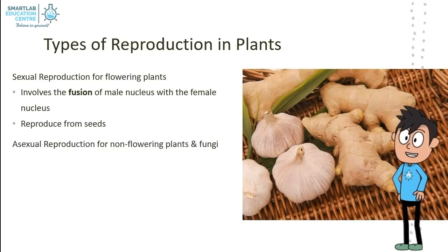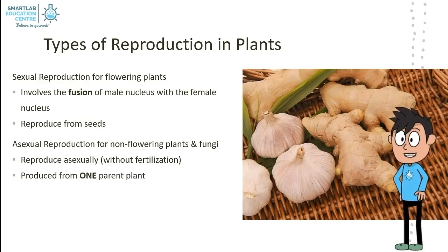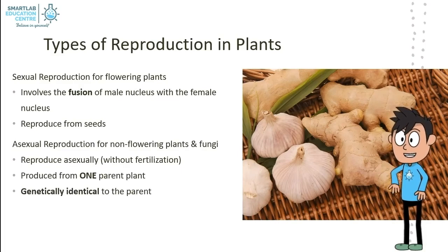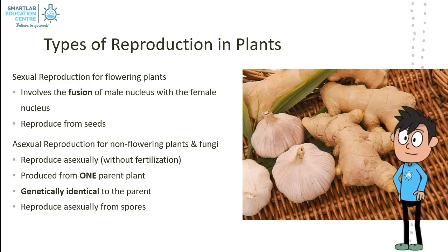Second, we have asexual reproduction for non-flowering plants and fungi. For this method of reproduction, fertilization doesn't occur. Only one parent plant is involved. The offspring are genetically identical to the parent. Fungi reproduce asexually from spores.